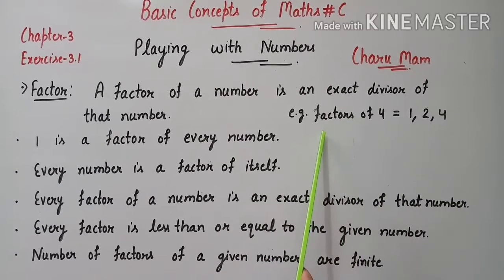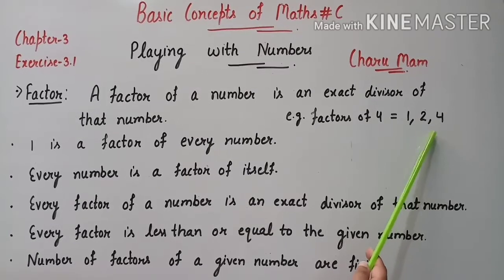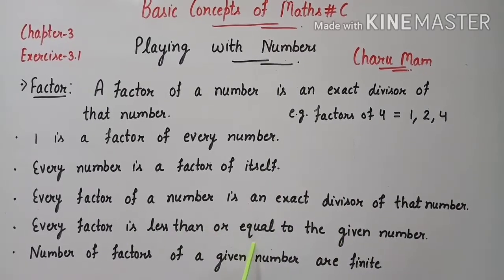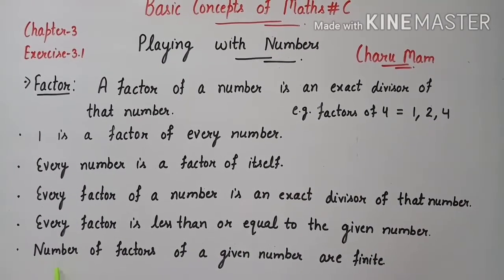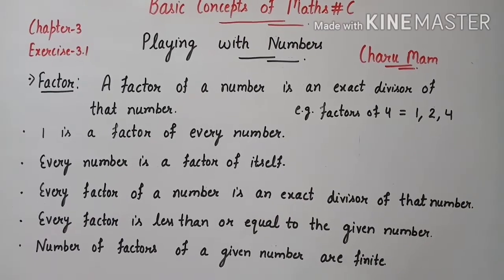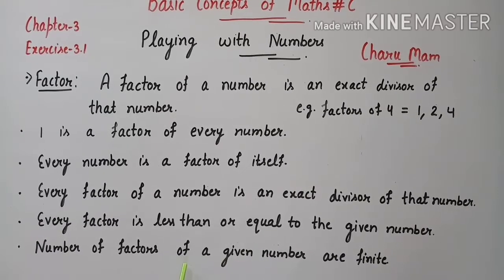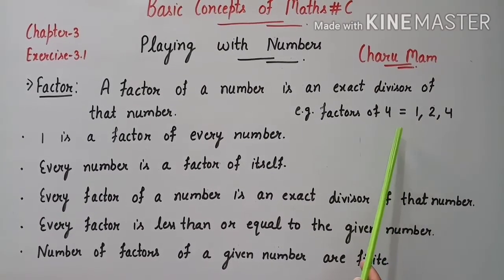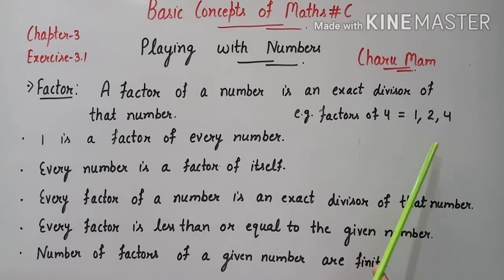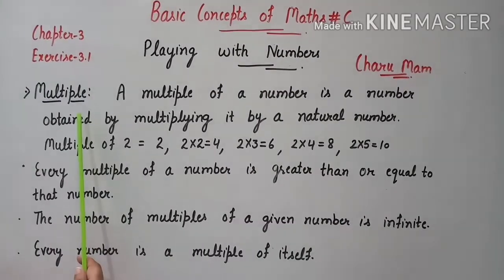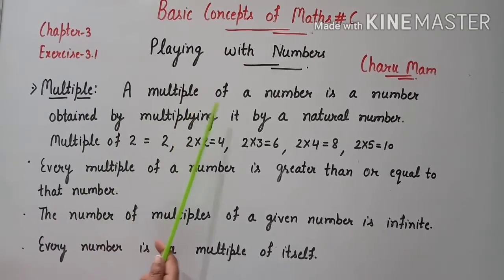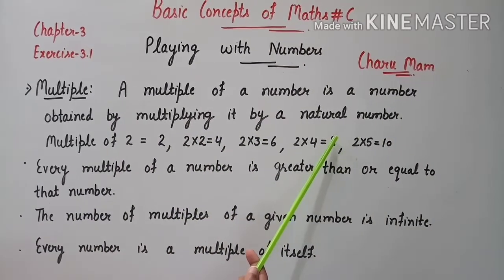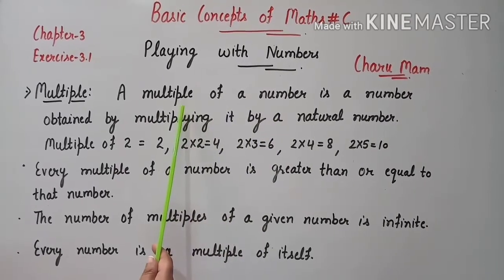It will not become greater than the given number. Next: the number of factors of a given number are finite. Which means, if we find out the factors of any number, then it will become finite.